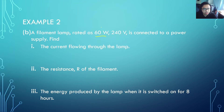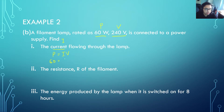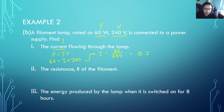Example 3a: A filament lamp rated at 60 watts and 240 volts is connected to a power supply. Find the current flowing through the lamp. Using P equals IV, with P equal to 60 watts and V equal to 240 volts, rearranging to make I the subject gives 60 divided by 240, which equals 0.25 amps.